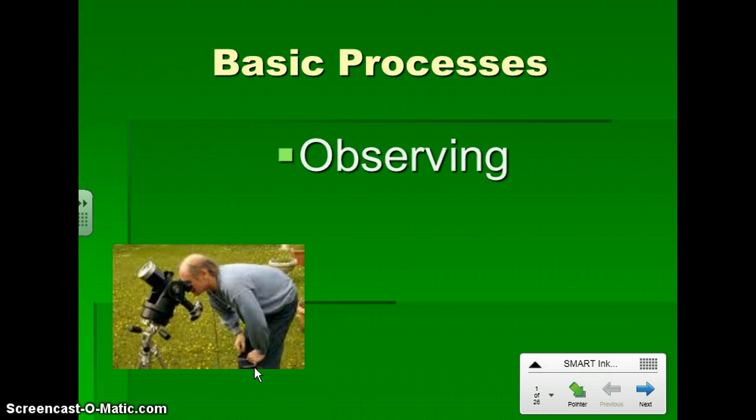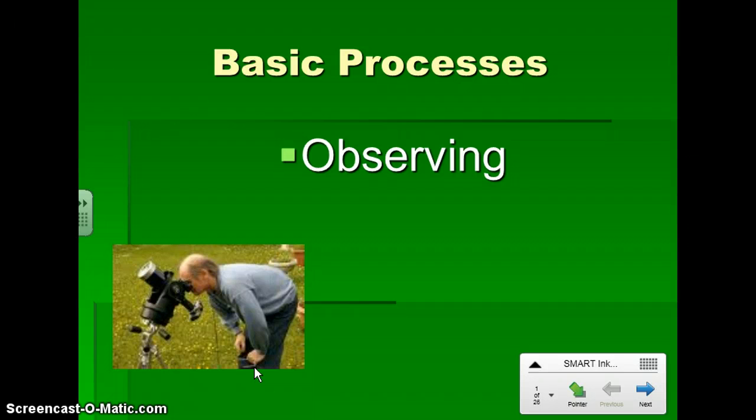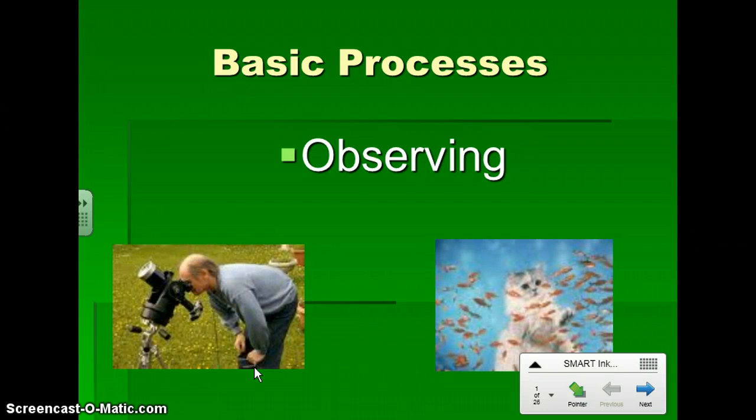So the first basic process is observing. And this is when we use one or more of our five senses to gather information. Now, the really important thing about observations is they must be factual and accurate, and we're going to keep careful records of our observations. Here we have two examples of organisms that are observing.